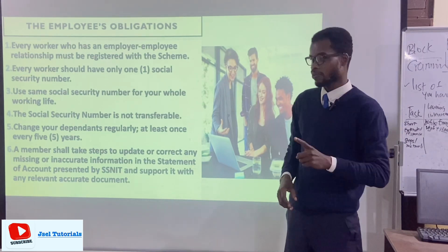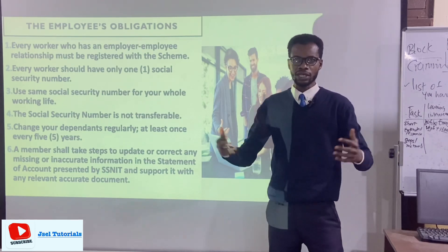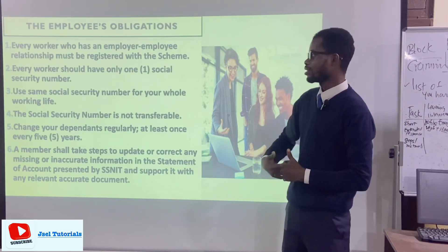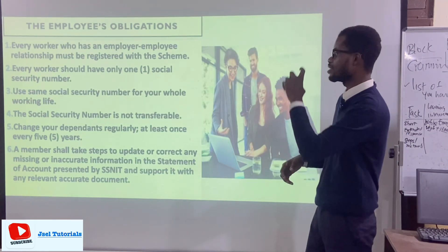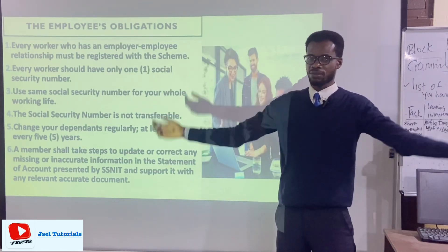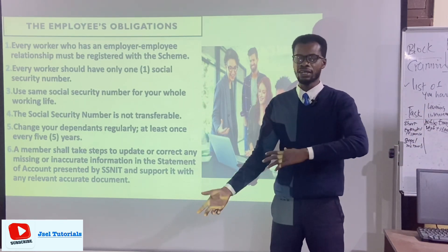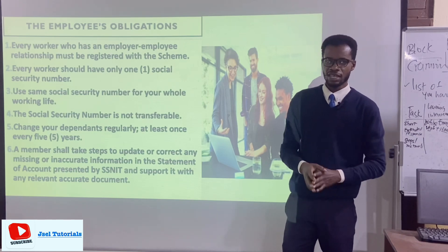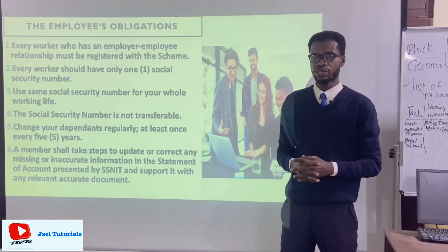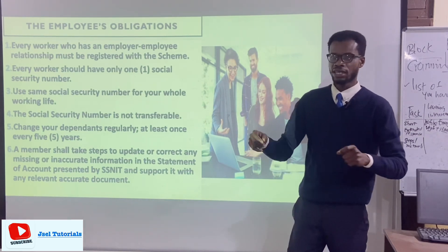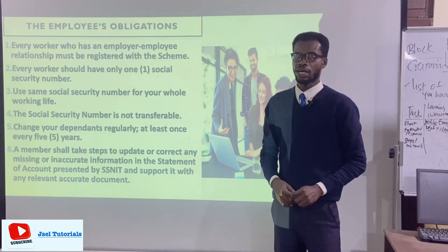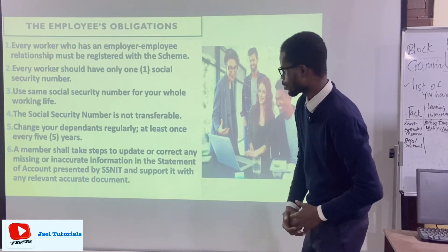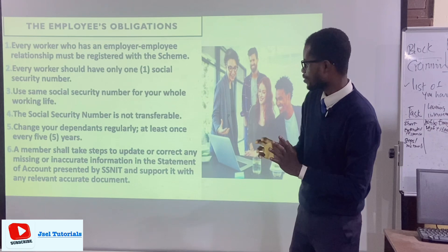Every worker must also update their dependents regularly — at least once every five years. A lot can change in five years: someone may have been single and later got married and had children. You can inform SSNIT and they will document the names, because dependents must be on record to enjoy survivor benefits when the contributor dies before age 60, or after retirement before age 75.